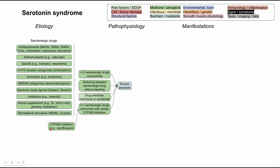CYP450 inhibitors include a long list of medications — one common example is ciprofloxacin. It's worth thinking through the pathophysiology: when you have a CYP450 inhibitor like ciprofloxacin, it decreases CYP450 activity. This enzyme in the liver is responsible for drug clearance, so decreasing it decreases your rate of drug clearance. This allows the serotonergic drug to accumulate, increasing serotonergic activity.